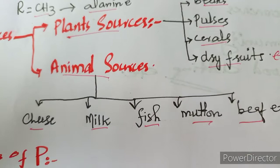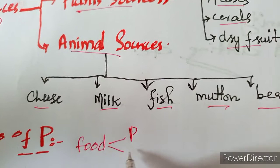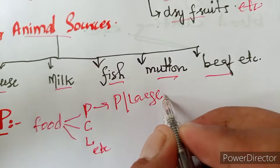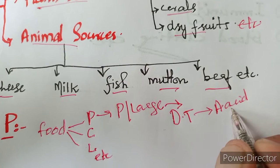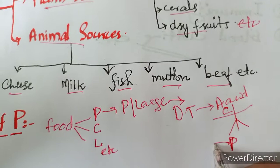Proteins are polymers and large units, so they cannot be absorbed directly into the blood. They are digested in the digestive tract and converted to amino acids. These amino acids are absorbed into the blood and then used to build different proteins in the body.